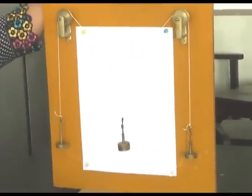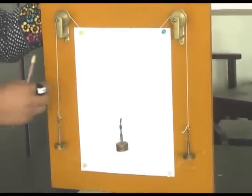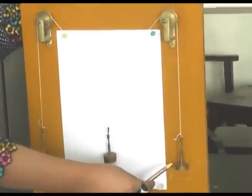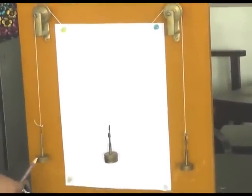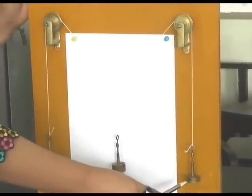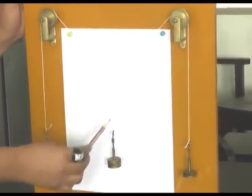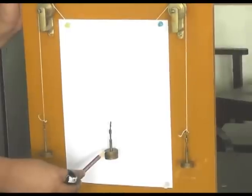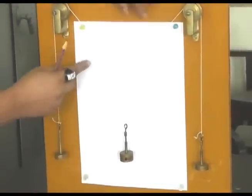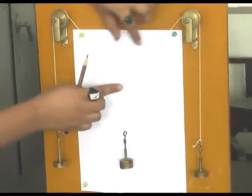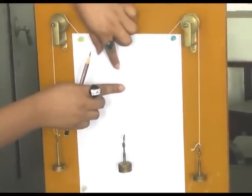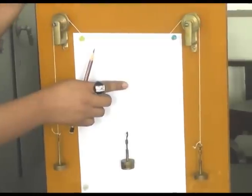Now we will start the performance. First of all, we have to tie up the thread with weights. These two weights which are of known values we will name them P and Q, and the central weight which is unknown weight and we have to measure its value. We will pin up the paper and be careful that knot of the thread should be in centre of the paper.